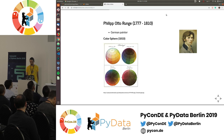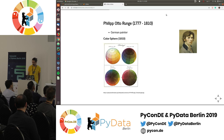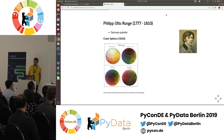Another German, Philipp Runge, was a pen pal with Goethe, and both worked on colors. He was the first to put a third dimension into color wheels — so instead of a flat wheel, we now have a color sphere. He had three main colors — yellow, red, and blue — with white at the top pole and black at the bottom. Cutting that sphere horizontally or vertically creates many more possibilities for new shades.